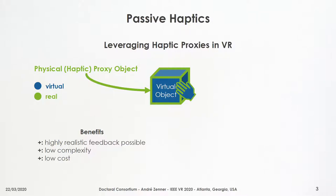When the haptic proxy is well chosen, the user can feel an appropriate shape, size, weight, texture, or temperature that corresponds to the virtual object, and highly realistic feedback can be delivered. This comes at a very low complexity and low cost, compared to alternative techniques such as active haptic feedback.